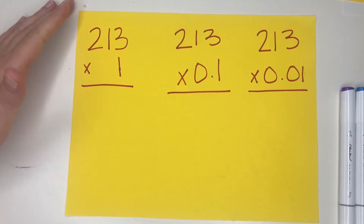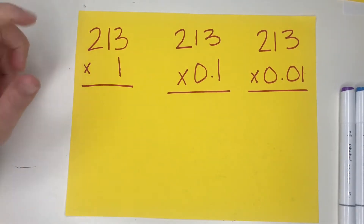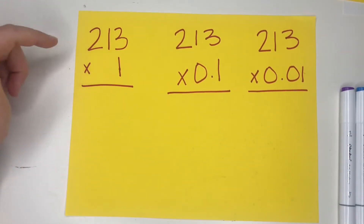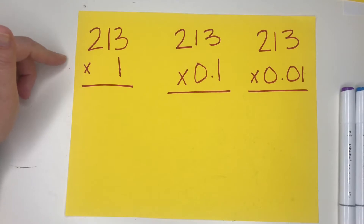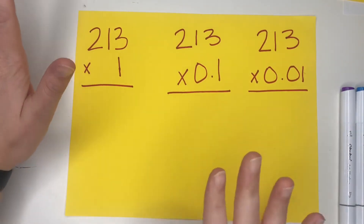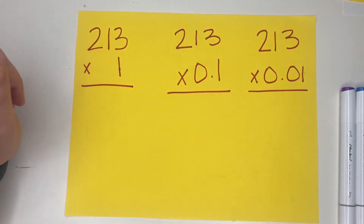Hey kiddos, it's Mrs. Visconti and we're going over lesson 4.7 for math today. We're going to talk about the shifting of digits when you're multiplying by decimals.